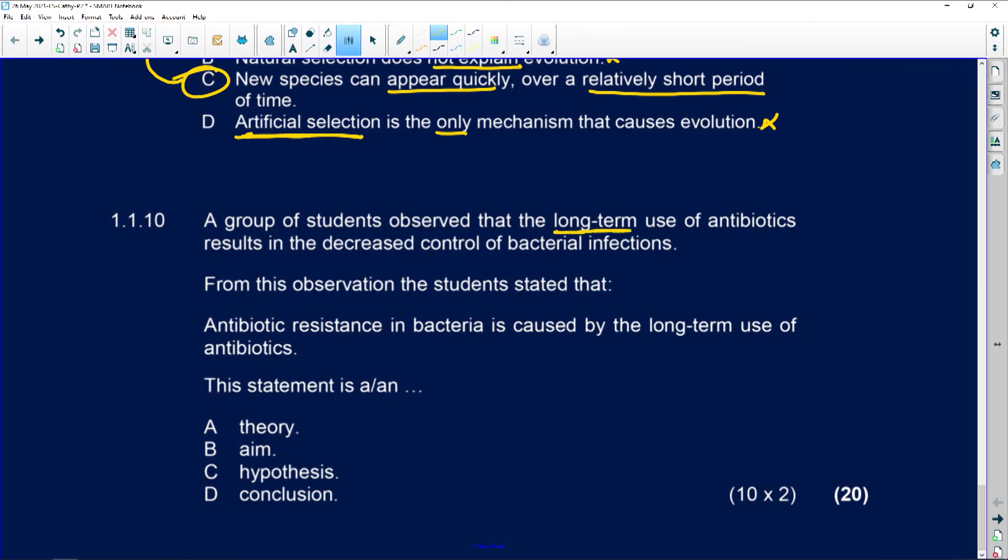A group of students observed the long-term use of antibiotics and it resulted in the decreased control of bacterial infections. Now, from this observation, the students stated that antibiotic resistance in bacteria is caused by long-term use of antibiotics. That's reasonable. So this statement is, well, it's not a theory because they've actually observed it. So they did an investigation. So it's not a theory. It's certainly not the aim of this experiment or investigation. It is the hypothesis. And it's also not a conclusion. So your answer is C. They are making that statement. They're saying antibiotic resistance in bacteria is caused by the long-term use of antibiotics. And then they can put together an investigation that can either prove or disprove their hypothesis.